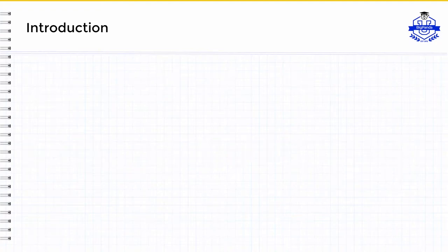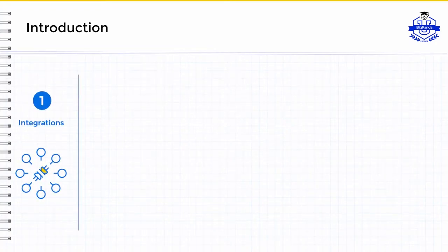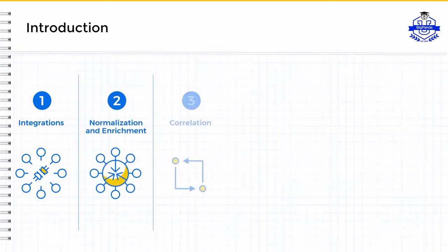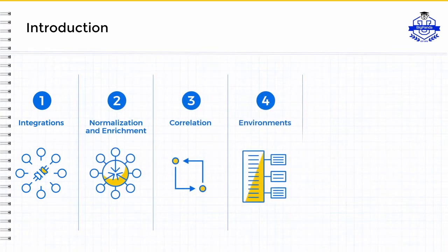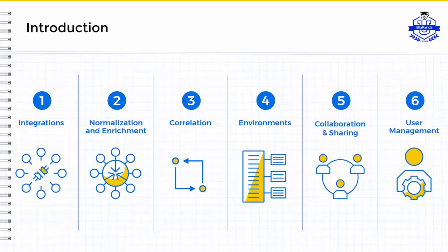BigPanda's No Experts Required setup can be broken down into six steps: out-of-the-box integrations, normalization and enrichment, correlation, environments, collaboration and sharing, and user management. In this video, we will provide an overview of each, and subsequent videos will provide more in-depth information into each area. While the product was designed to be easy to set up, feel free to reach out to our support team via our in-app chat if you have any questions.